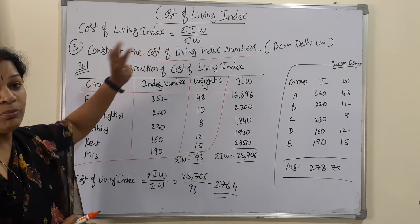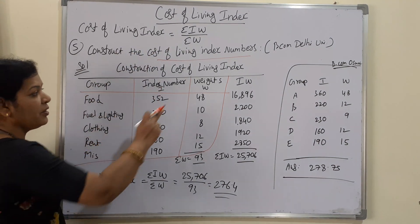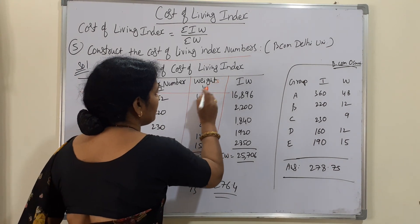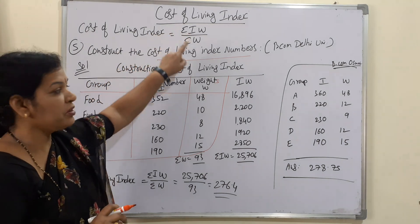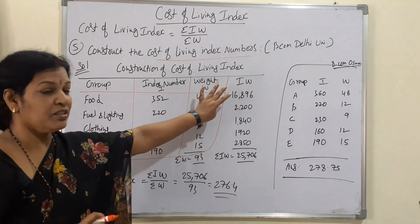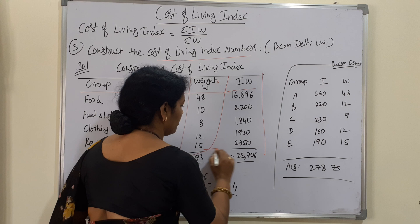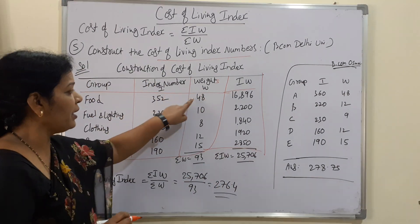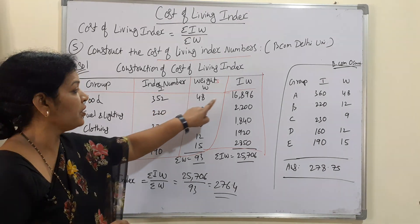As per the formula Sigma IW divided by Sigma W, we need index numbers (I) and weights (W). We first calculate Sigma IW, which means I multiplied by W for each group. For example, the index number 352 multiplied by weight 48 gives 16,896.